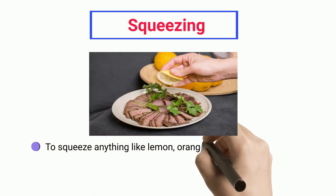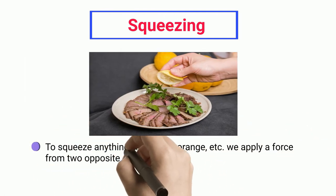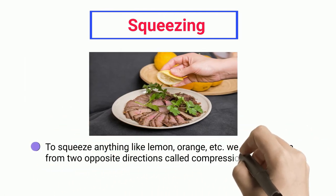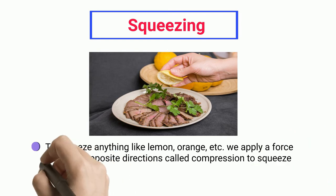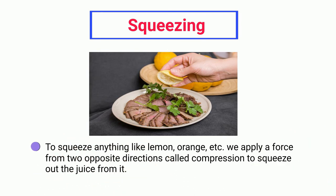Squeezing: to squeeze anything like a lemon or orange, we apply force from two opposite directions — this is compression — to squeeze out the juice.